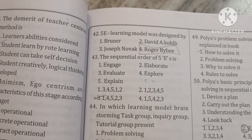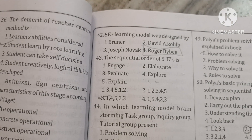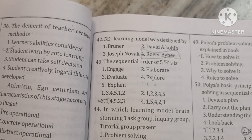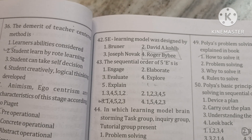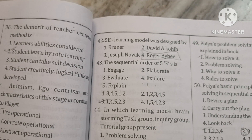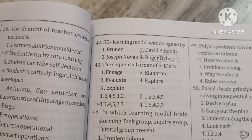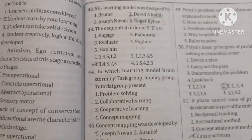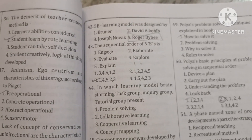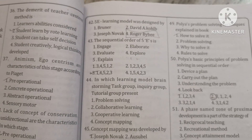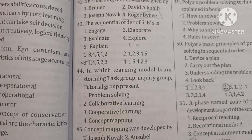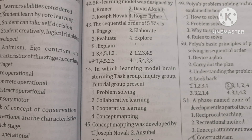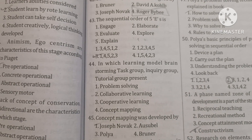The sequential order of the 5Es is: 1. Engage, 2. Explore, 3. Explain, 4. Elaborate, 5. Evaluate. In which learning model are brainstorming, task group, inquiry group, and tutorial group present? That is collaborative learning.